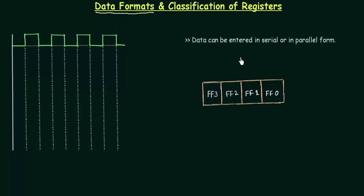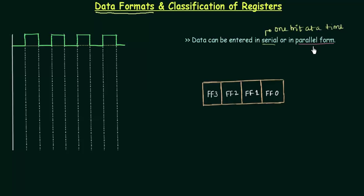Data can be entered in serial or parallel form. By serial form I mean one bit at a time. By parallel form I mean all the bits at a time.